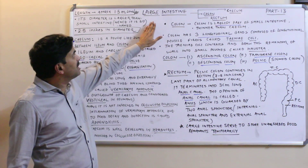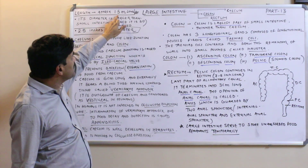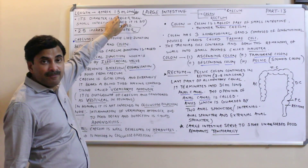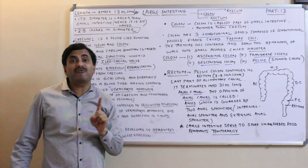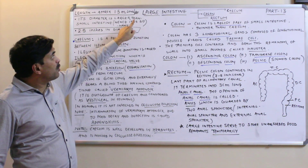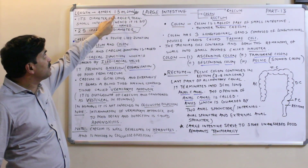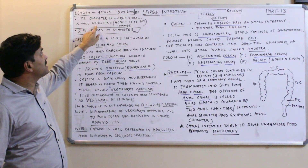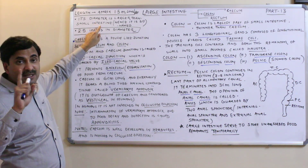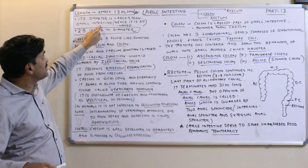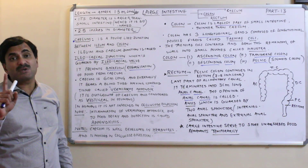Today we will discuss the large intestine. It has a length of approximately 1.5 meters — the small intestine was 6.25 meters long, but the large intestine is only 1.5 meters. It is called 'large' not because of its length, but because its diameter is larger than that of the small intestine.